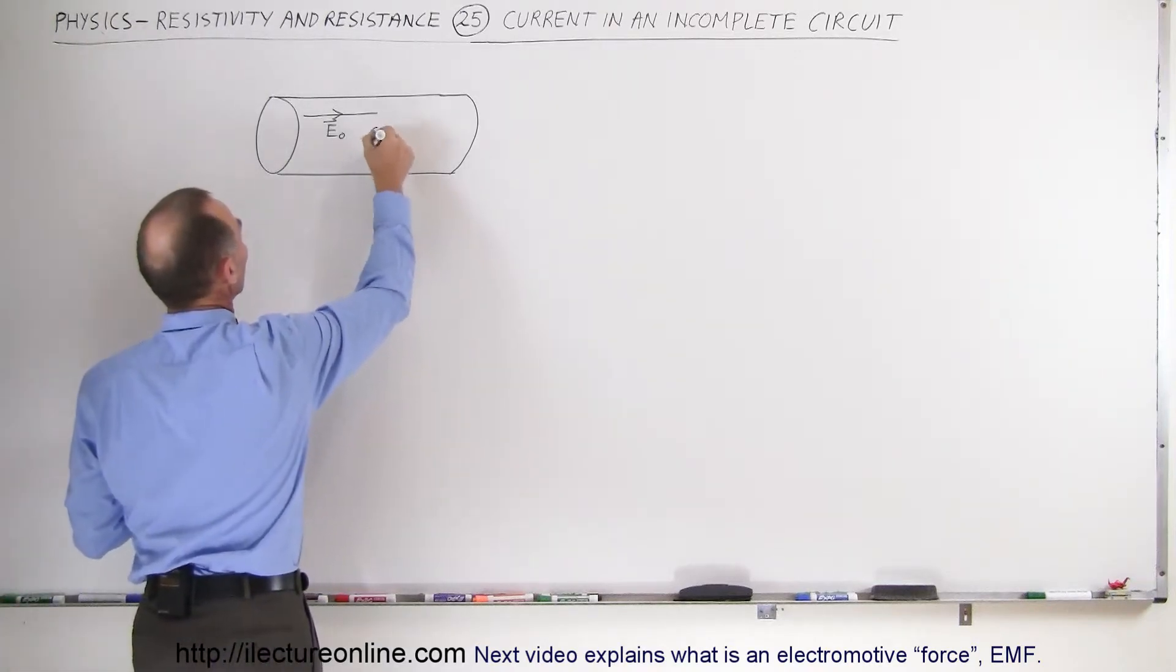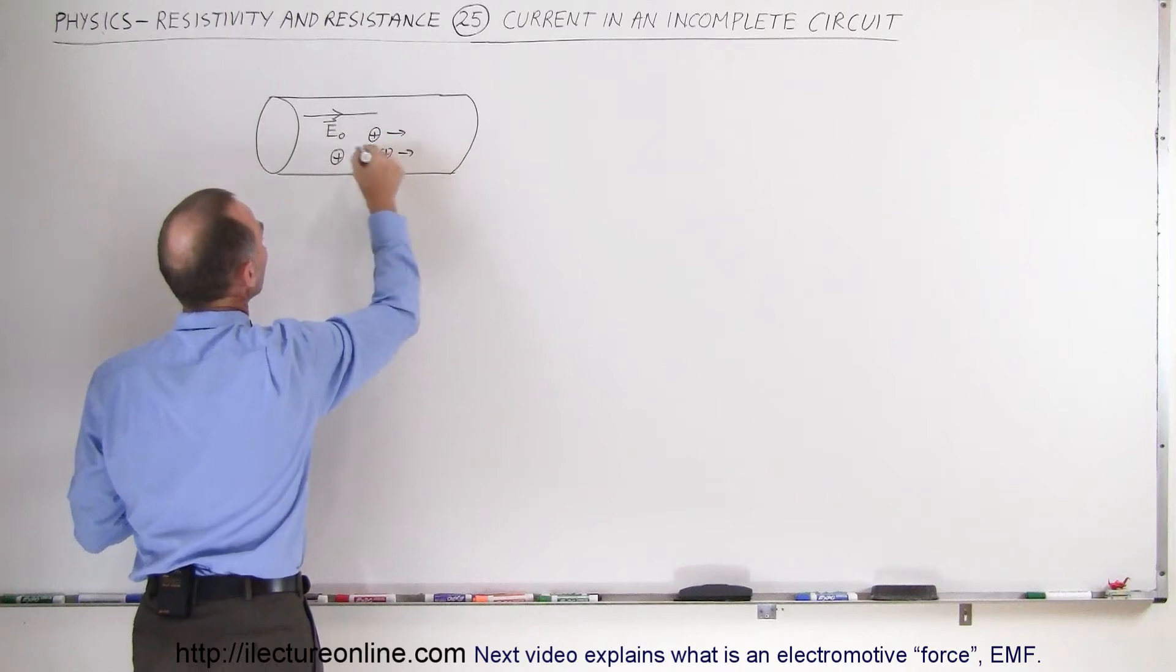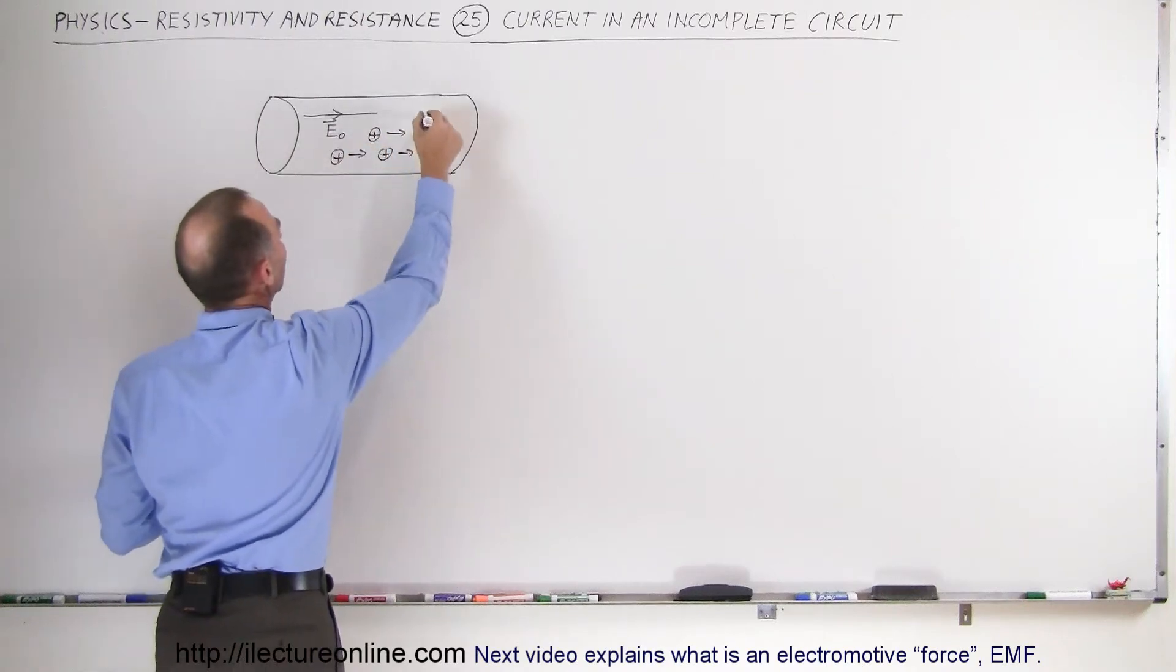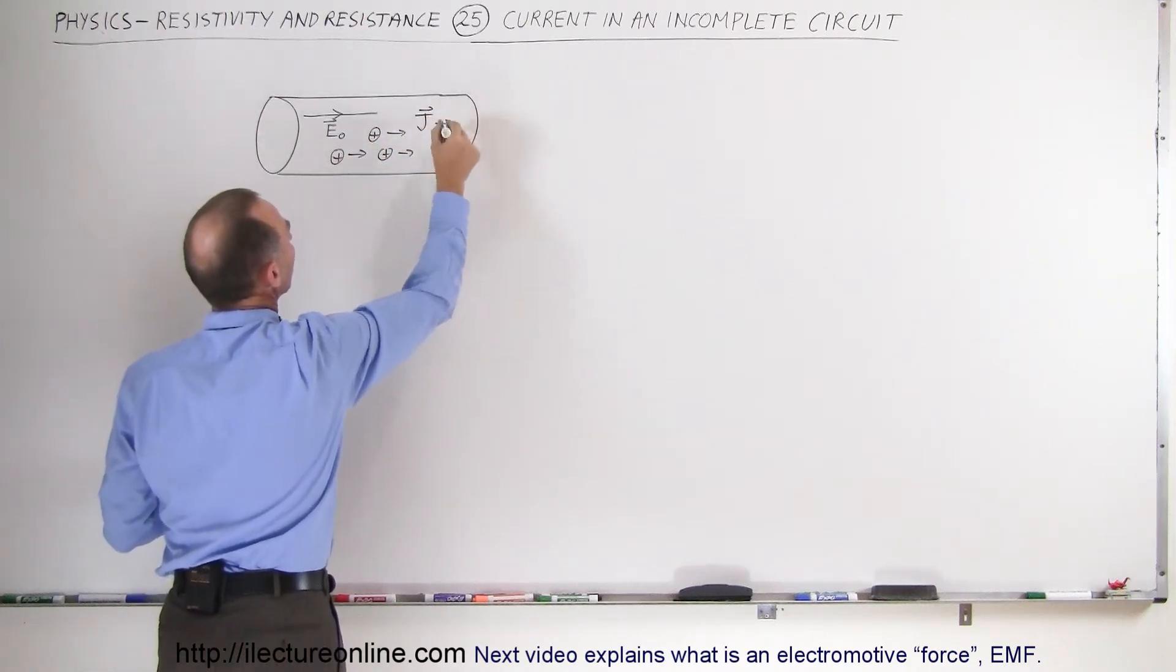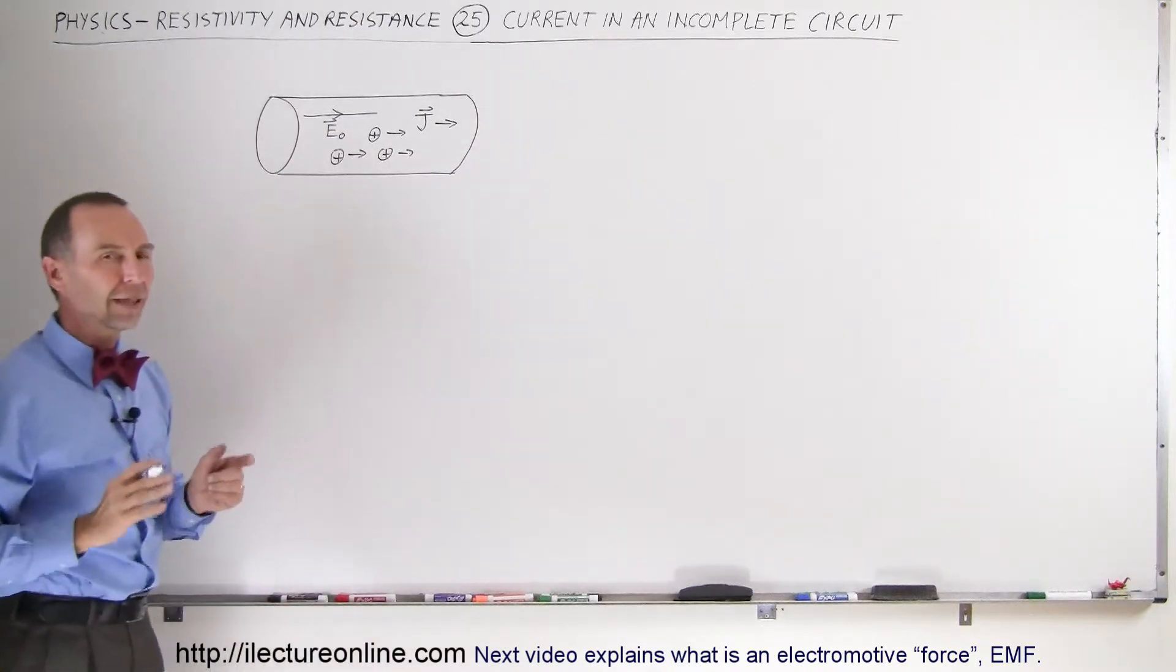So positive charges, able to move, will begin to move towards the right and will create a current density towards the right. That's the initial picture.